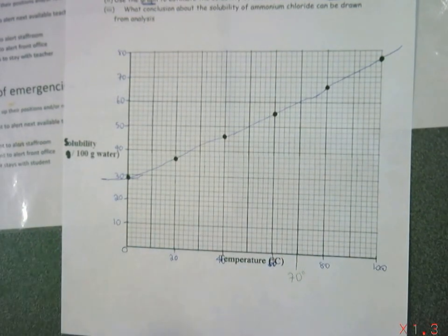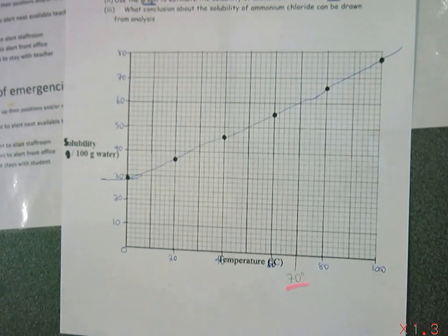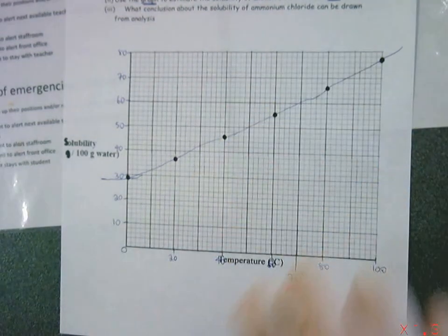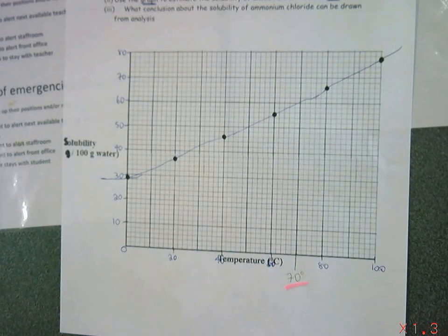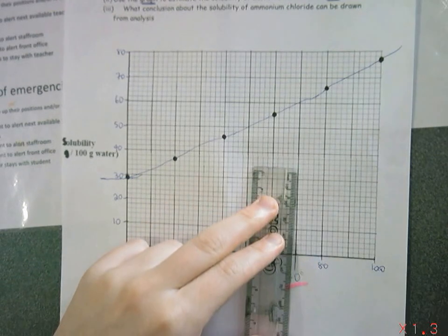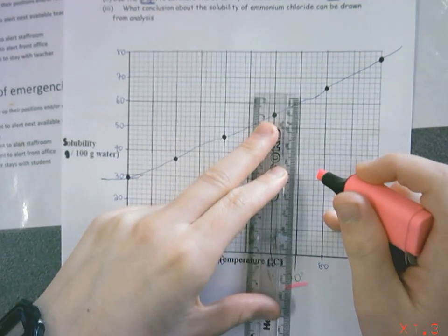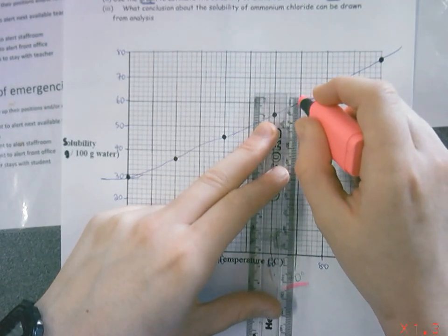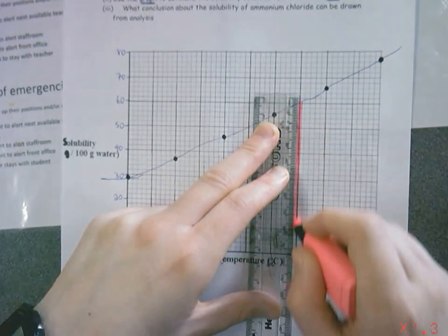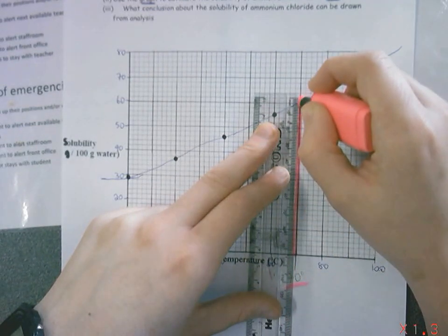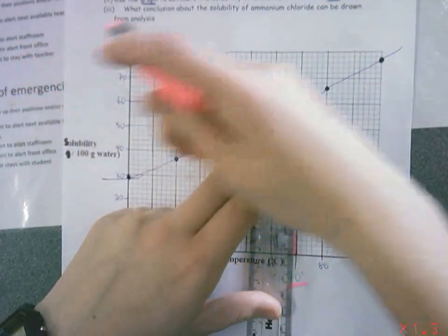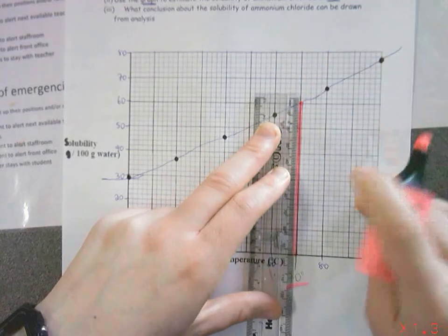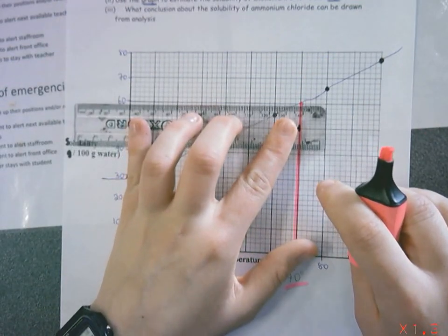We are going to be using our graph and our number to find out what the solubility is. The best thing you're going to do is you're going to need your ruler for this. You go to where 70 is, because that's all you've been given in the question. You're going to get your ruler and you're going to go up as far as your line, wherever you plotted your graph. You're going to get your pen and draw your line up. When you get to here, you don't keep going. You stop the minute you hit that curve. The minute you hit that, you stop, turn your ruler towards the other axis, and draw your line across.